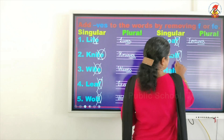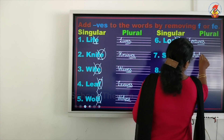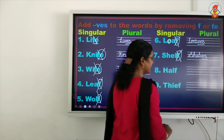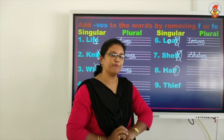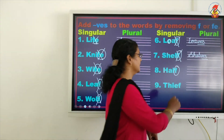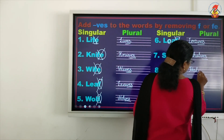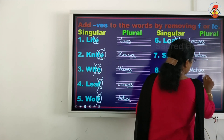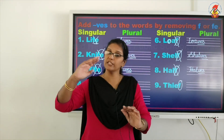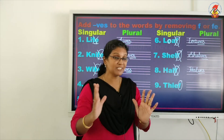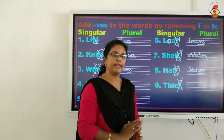We have K-N-I-F-E — knife — this is ending with FE. So we will throw the FE and in its place write VES: K-N-I → then in the place of FE we write V-E-S. Now coming to L-E-A-F — leaf — we have F but we do not have E after F. So we will cut just this F and write L-E-A then V-E-S in the place of F.